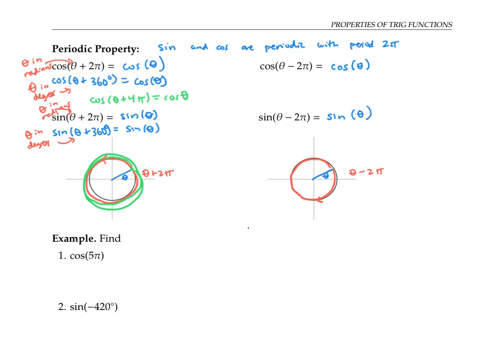So if we want to find cosine of five pi, that's the same thing as cosine of pi plus four pi, which is the same thing as cosine of pi. Thinking about the unit circle, pi is halfway around the unit circle, so cosine of pi means the x-coordinate of that point. That point has coordinates negative one, zero, so cosine of pi must be negative one.